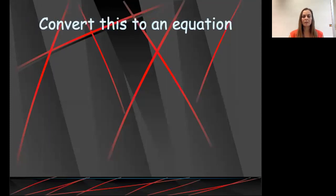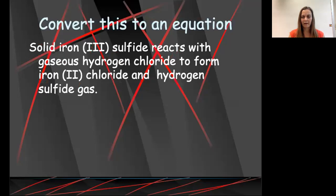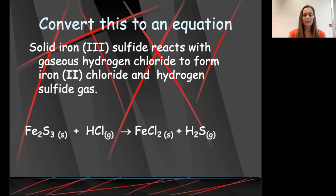That's going to be important when we're writing equations that we write those as diatomics. So let's convert this to an equation. We have solid iron(III) sulfide reacting with gaseous hydrogen chloride to form iron(II) chloride and hydrogen sulfide gas. So we're going to write iron(III) sulfide. This is what we've been practicing for the last week or so. Iron(III) sulfide is going to be Fe2S3. And then because it says solid, we're going to have a lowercase (s) in parentheses afterwards. Then it says gaseous hydrogen chloride. So we're going to write HCl with a parentheses (g) to form. So we're going to write our arrow, iron(II) chloride FeCl2 and hydrogen sulfide gas H2S(g). Notice this is a skeleton equation.